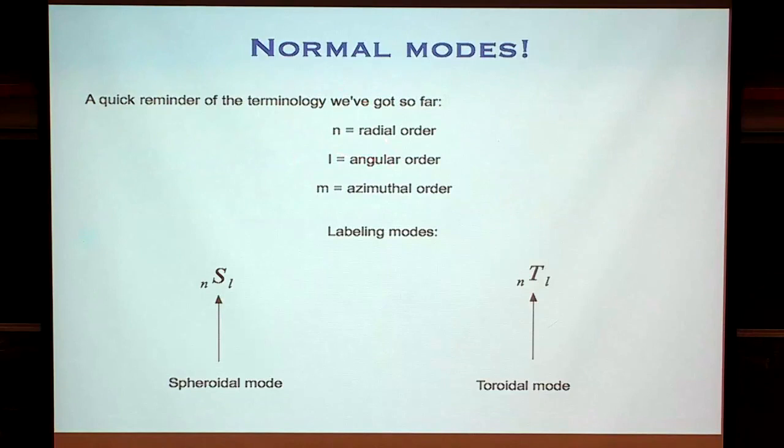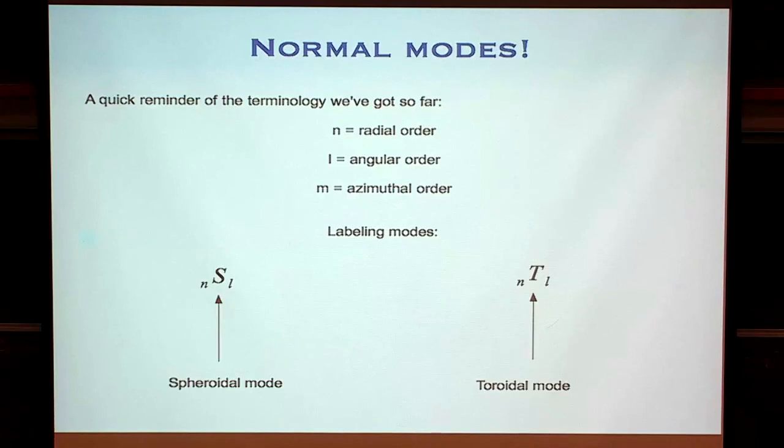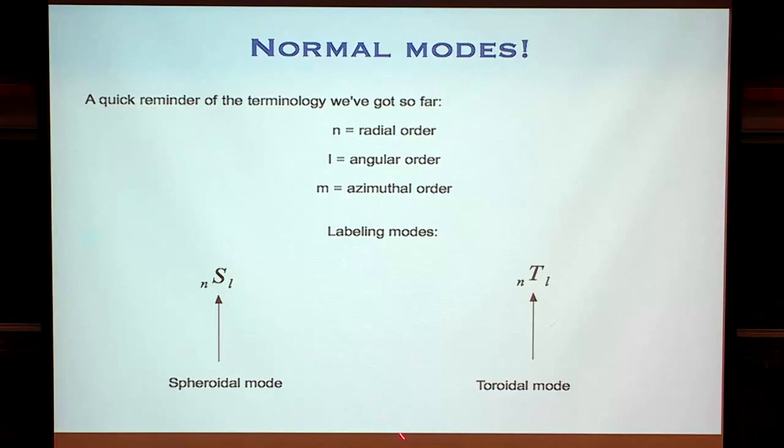A quick reminder of the terminology: N is the radial order, telling us about what happens with depth — how many zeros you get. L is the angular order, telling us about the pattern on the surface. M is the azimuthal order, telling us how you arrange that pattern on the surface. At the moment, all the different ways of arranging that pattern have the same frequency — they're degenerate. Spheroidal normal modes are written as nSl and toroidal normal modes as nTl — you'll need to remember this terminology for Philippe's tutorial tomorrow.